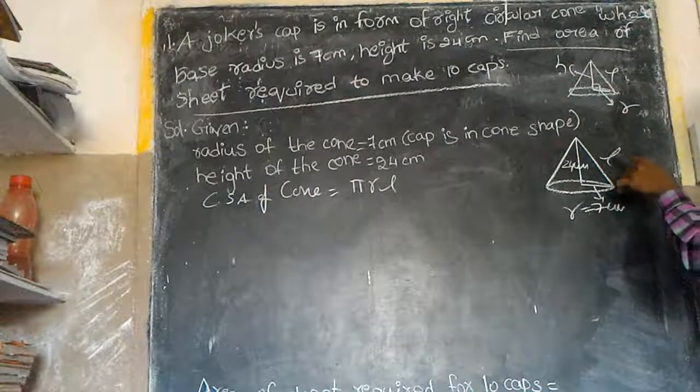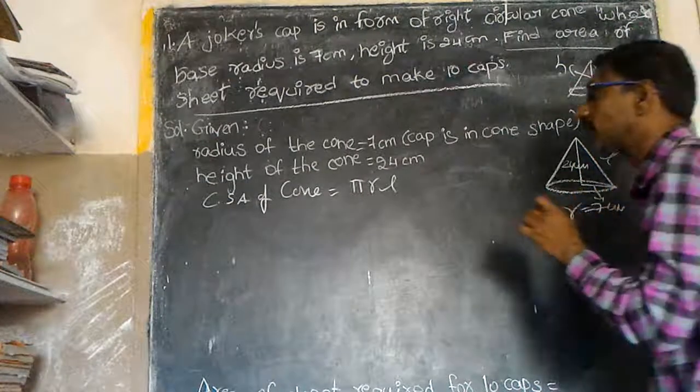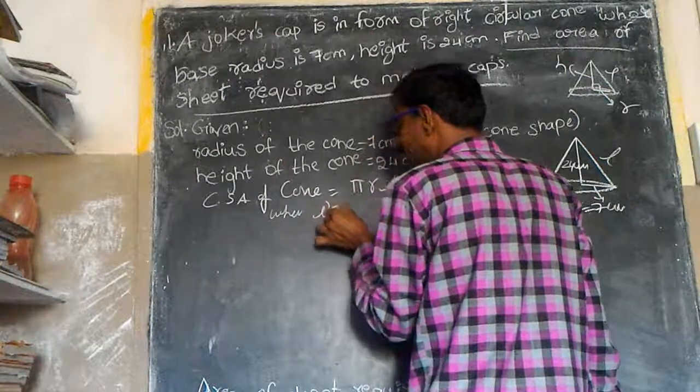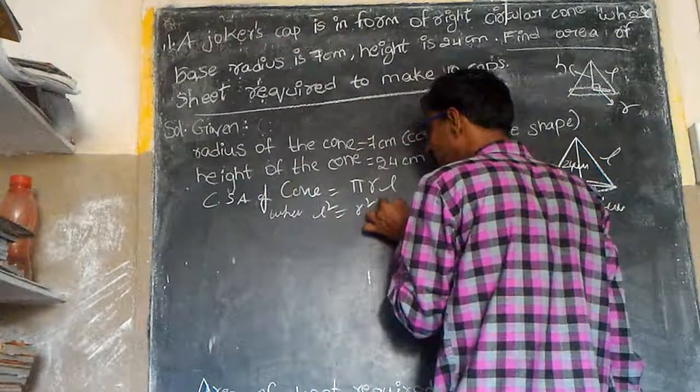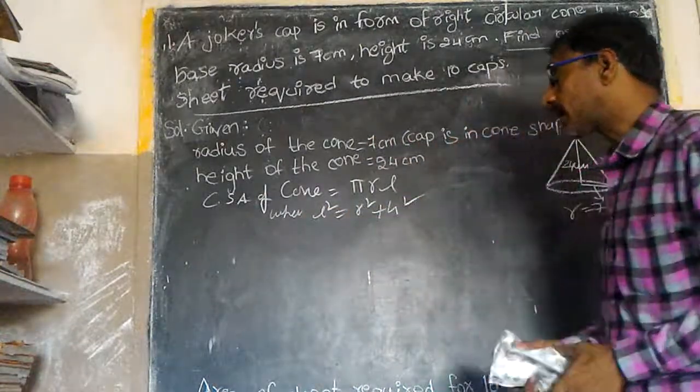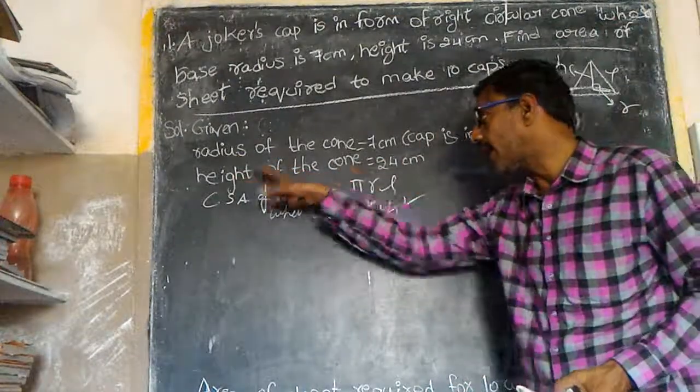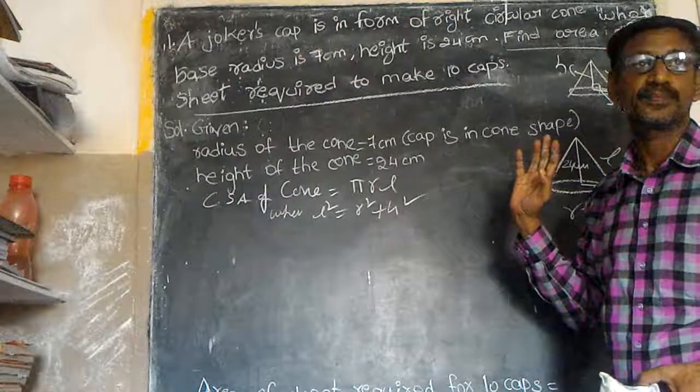Now L² is equal to R² plus H². Here, radius of cone is 7 cm, height of cone is 24 cm.